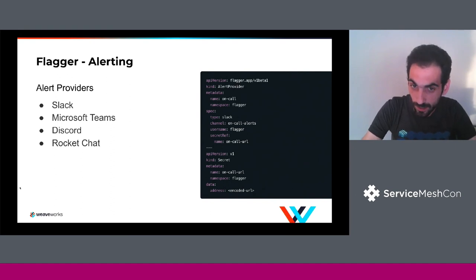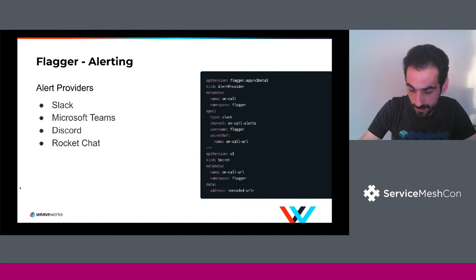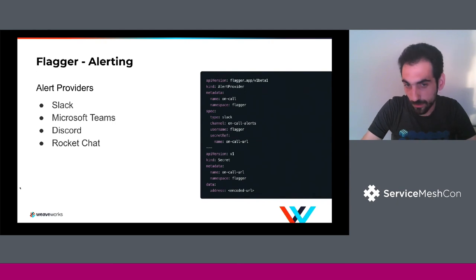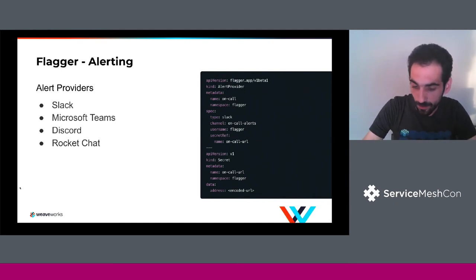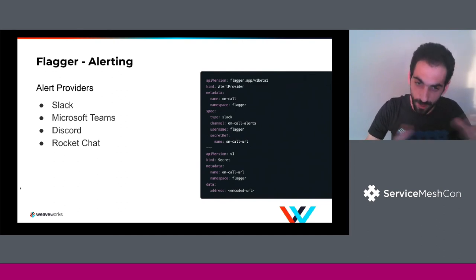Another feature is alerting. Flagger can send events — for example, when a canary starts, when it's rolled back, what type of errors were encountered — to Slack, Microsoft Teams, Discord, and Rocket Chat. You can define different alerts for different things, and a canary release object allows you to define multiple types of alerts.